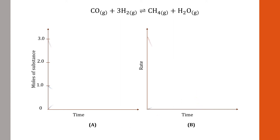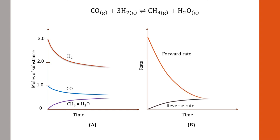As soon as the reaction starts, the amount of reactants decreases and the amount of products increases. The rate of the forward reaction — reactants changing into products — decreases. As soon as the products form, they can react together and produce reactants, so the rate of the reverse reaction increases. When do we say that equilibrium is reached? Where does equilibrium start?